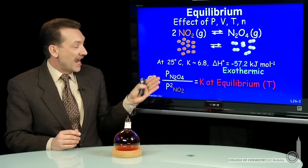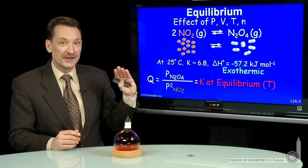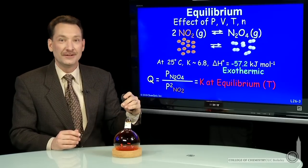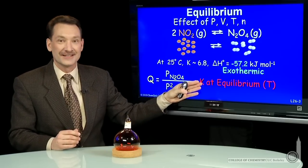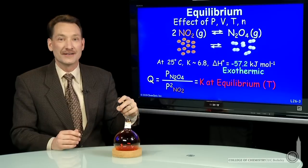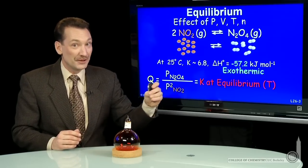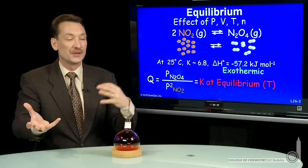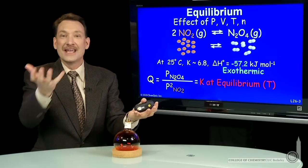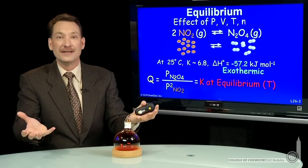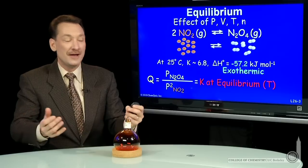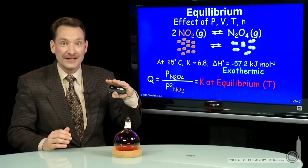So reaction quotients, given enough time, will equal equilibrium constants. They'll remain at equilibrium, because at equilibrium, there's no free energy difference between the products and reactants. They interchange freely. It's a dynamic equilibrium, but it's one where K is constant.